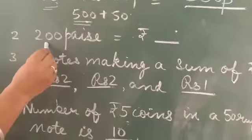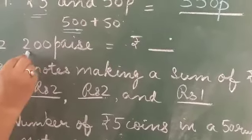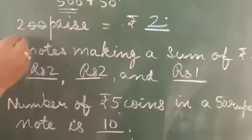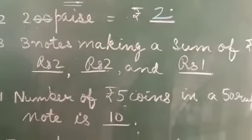Next is: 200 paise is equal to how many rupees? What is it? 2 rupees. 200 paise is equal to 2 rupees. Clear?